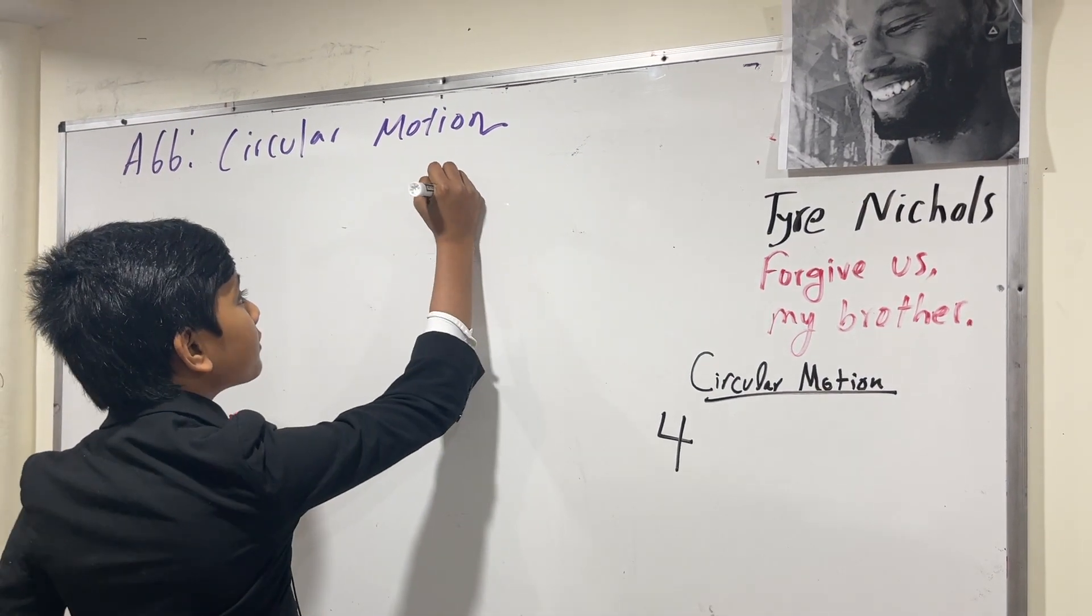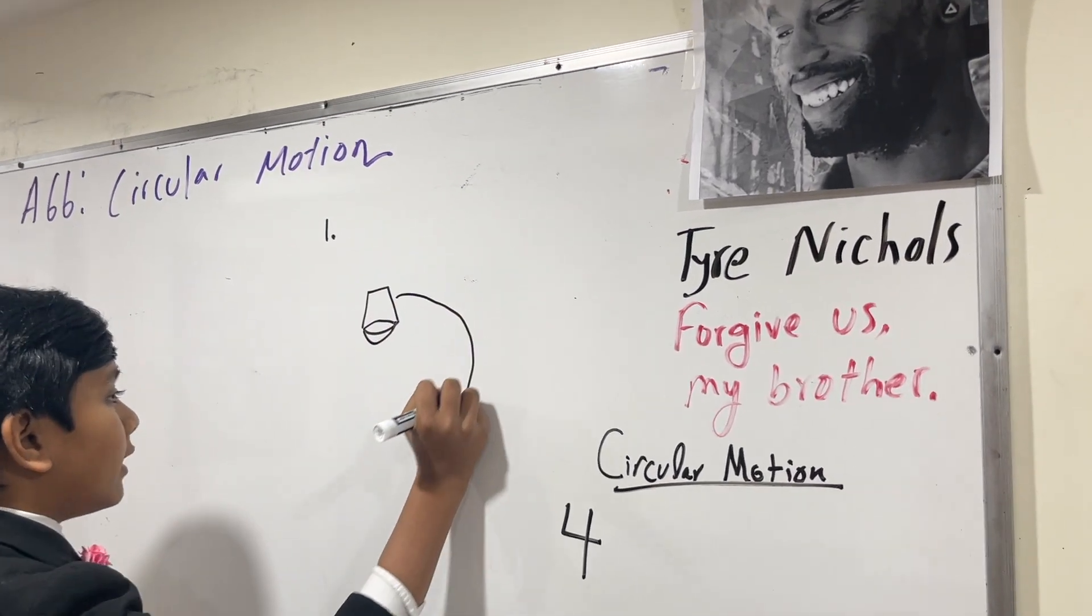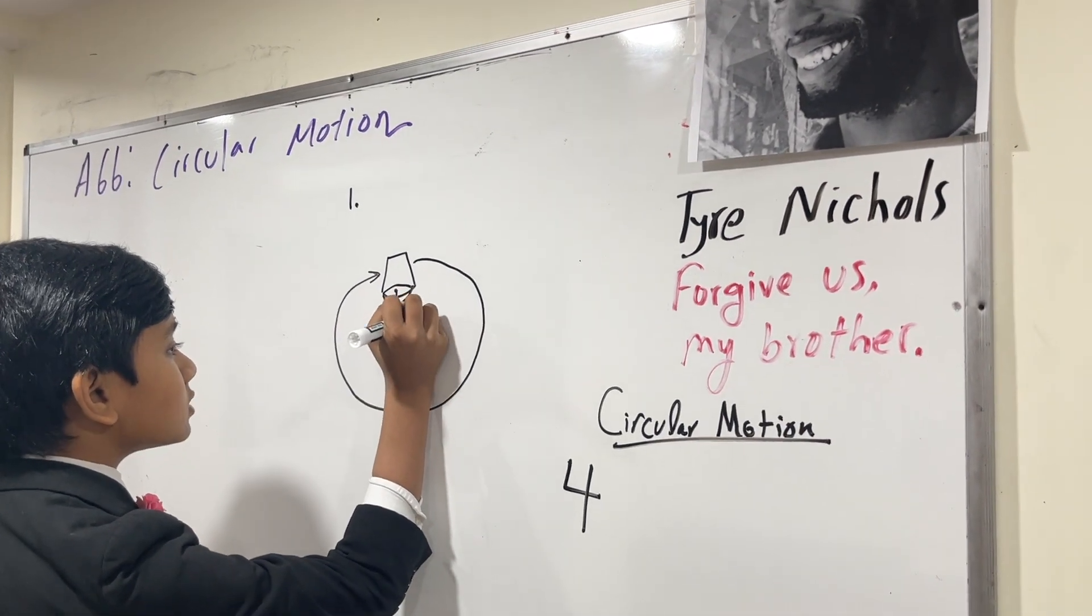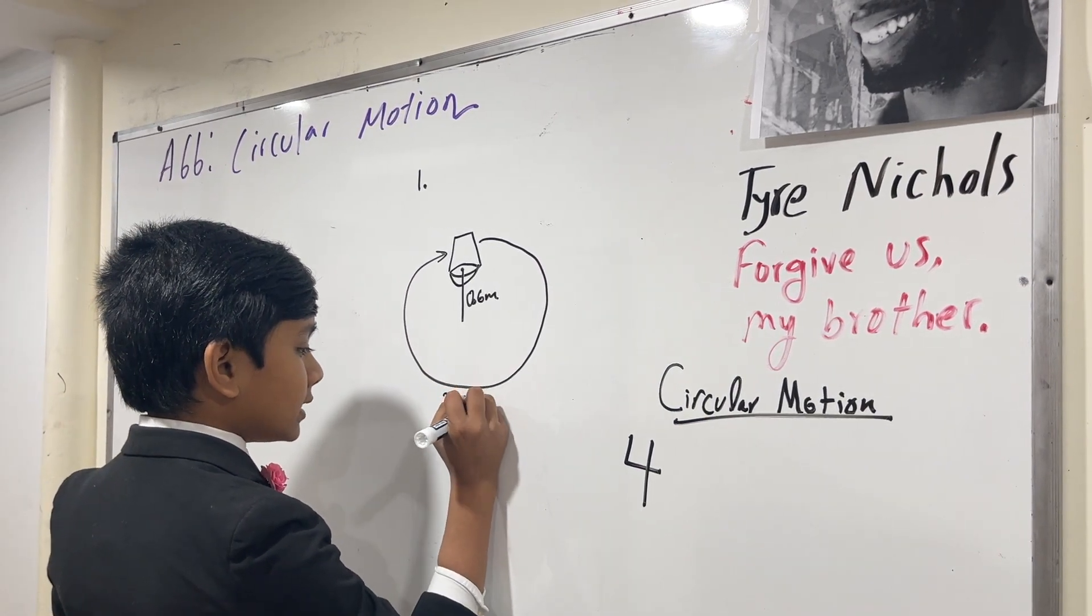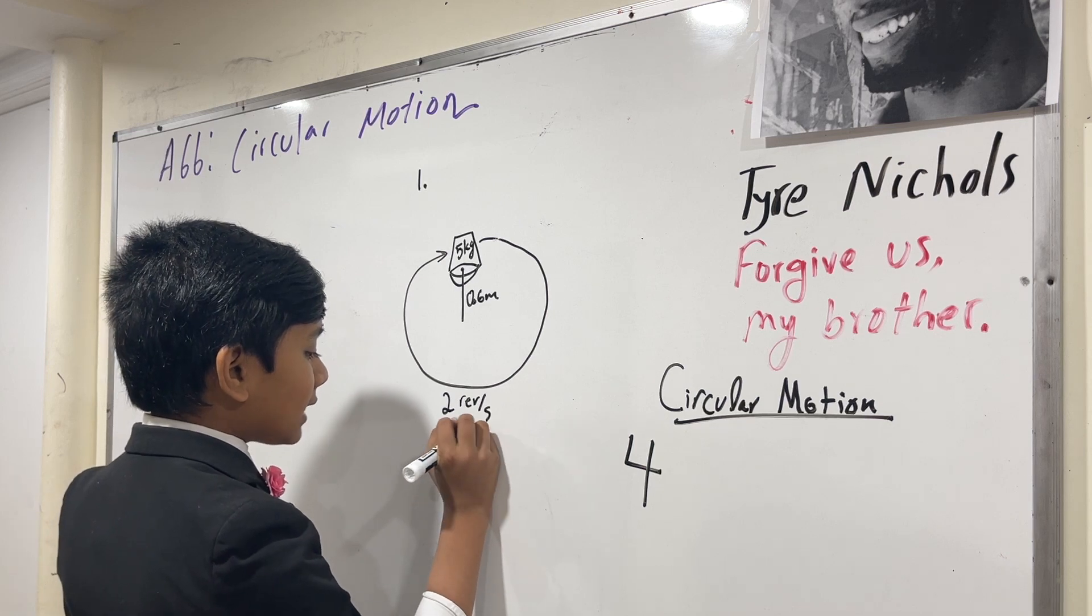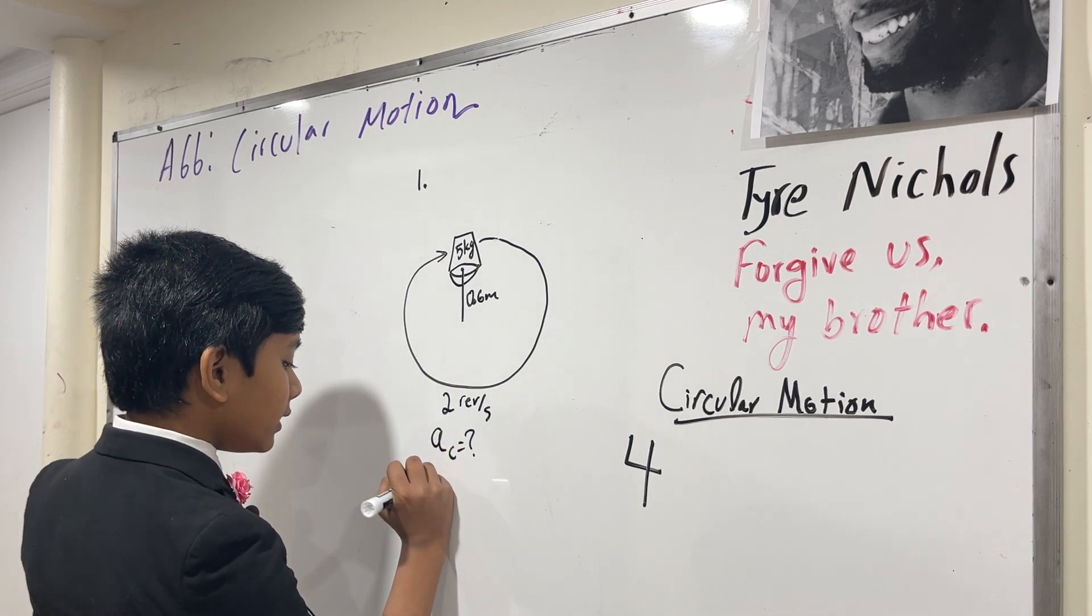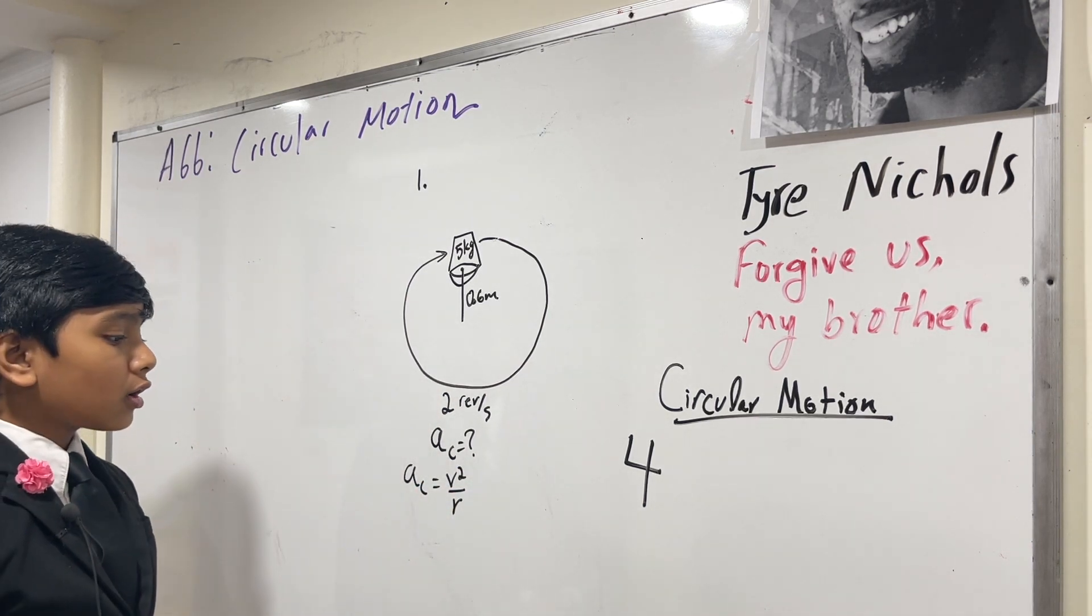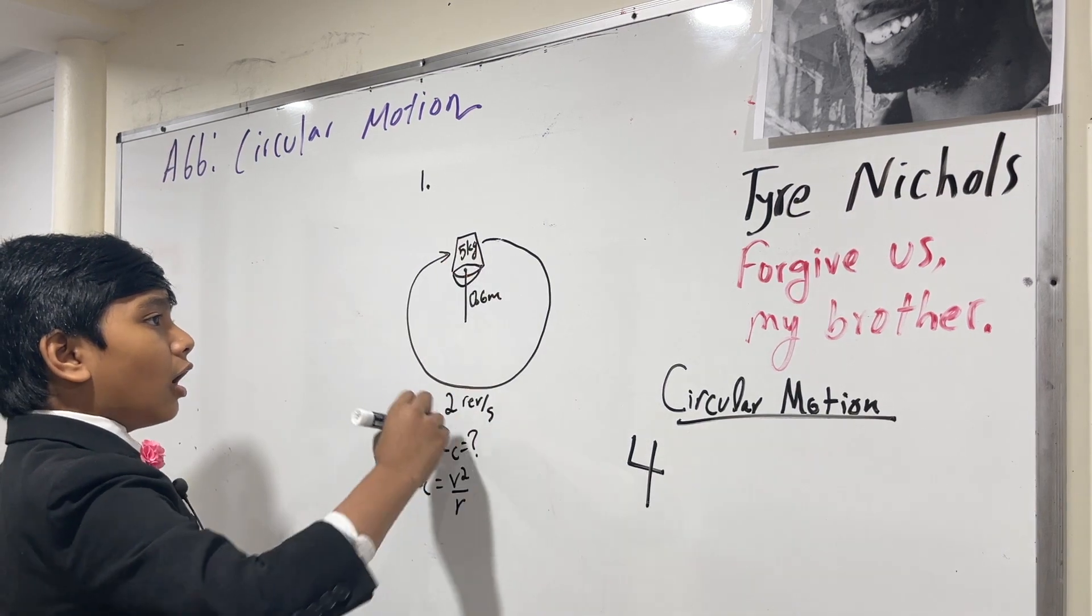Here we have problem number one. A five kilogram bucket is being spun around in a circle with a rope of length 0.6 meters. This is a very fast spinner, and so it makes two revolutions a second. Let's put five kilogram mass on it. What we're trying to find is the centripetal acceleration of this bucket. How do we find that?